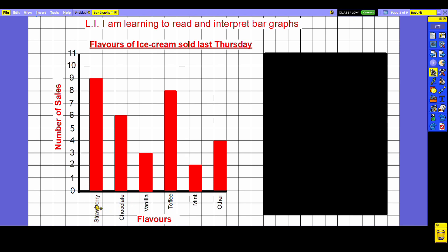In some bar graphs you might find that these axes are reversed, so the categories may sometimes be in the y-axis and the numbers on the x-axis, but more often than not it's this way around with the categories at the bottom and the numbers up the side.